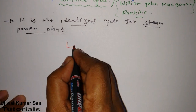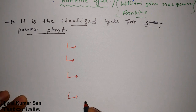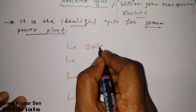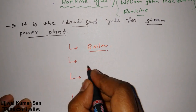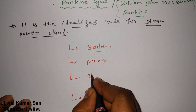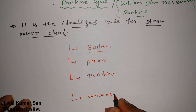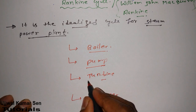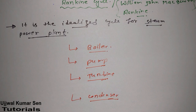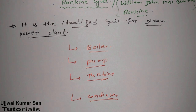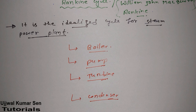Let's go through the most important components used in this cycle. First, we have a boiler; we have a pump; we have a turbine; and the last one is a condenser. Each of these components has a different application in the cycle, and because of that we get power through steam — that's why this is known as the idealized cycle for a steam power plant.